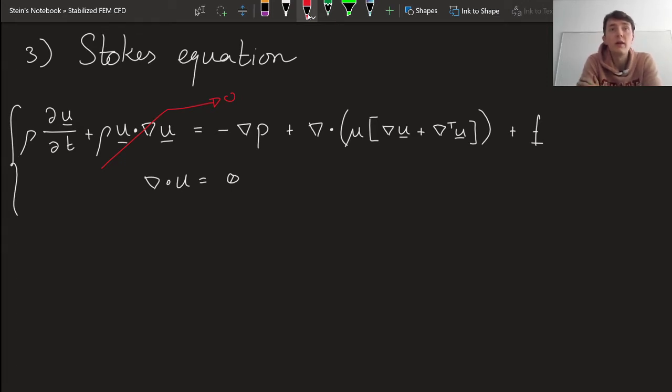Now, when is this a valid assumption? Clearly, in order for this to be zero, either the gradient of u has to be zero, or u has to be zero.